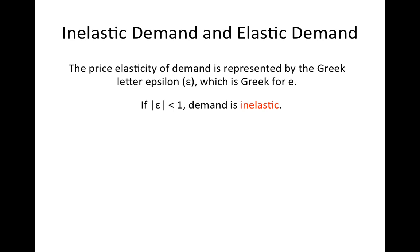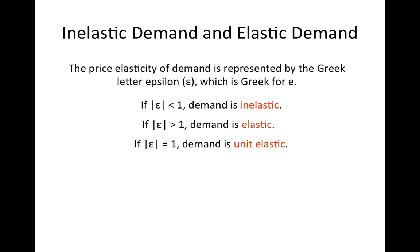Typically, goods that do not have many good substitutes tend to be inelastically demanded. If epsilon is greater than 1, then demand is elastic, meaning consumers are very responsive to changes in prices. Generally, goods that have many substitutes have more elastic demands. In addition, goods on which we spend a larger portion of our income also tend to have more elastic demands, since we have a larger incentive to adjust our purchases in response to price changes. Demand for goods tends to be more elastic in the long run than in the short run, since consumers have more time to adjust their purchases. If the price elasticity of demand equals 1, then we say that demand is unit elastic — neither elastic nor inelastic.